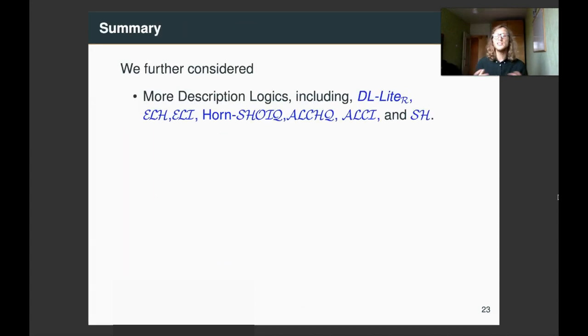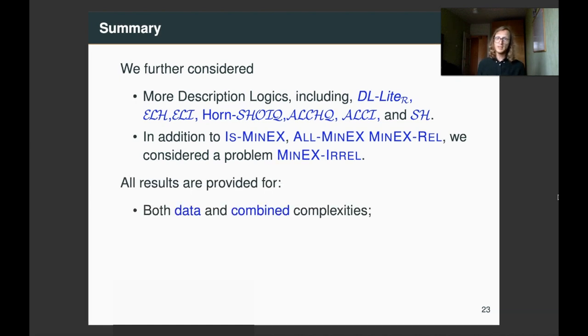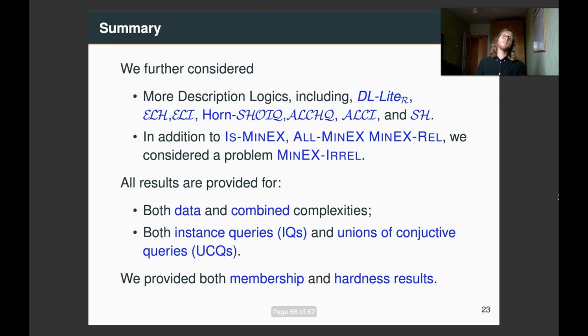So, we summarize our work. In addition to what we presented, we consider even more description logics. We consider one more problem, which is minex-irrel. Given a set of forbidden subsets of facts, is there a minimal explanation that does not contain any of those sets of forbidden facts? And also, we provide a complete analysis. For both data and combined complexities, we provide all the results for all languages, for all measures, both for instance queries and unions of conjunctive queries. And we provide both membership and hardness results. So, we've just shown three results, but we provide a complete picture for all of these languages.